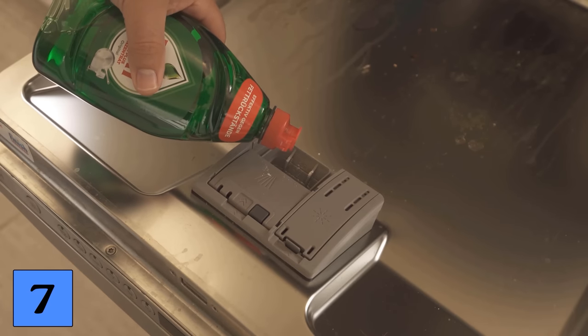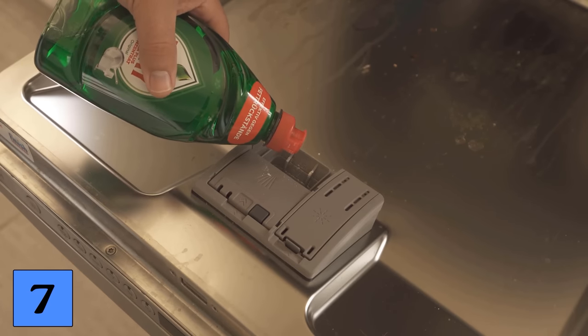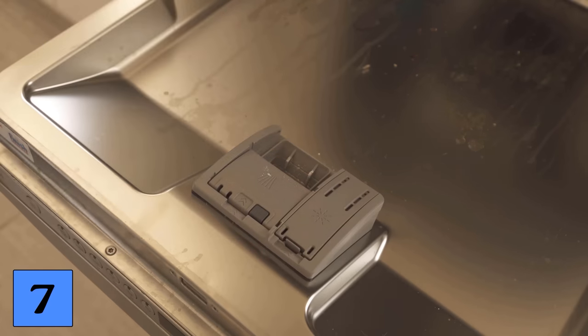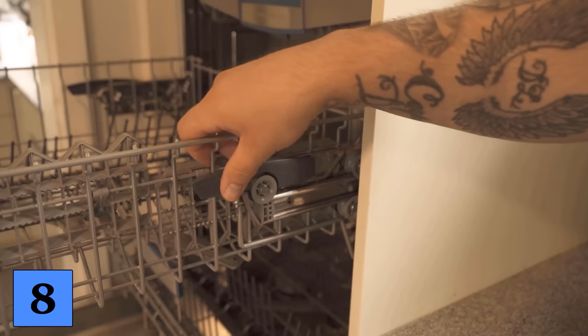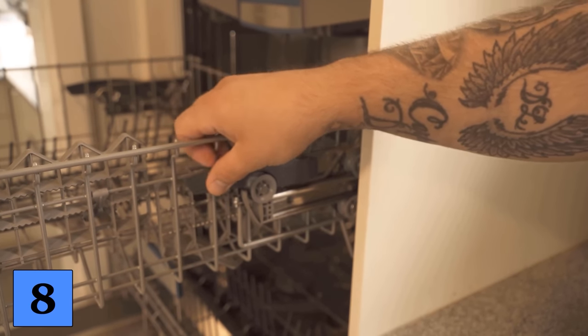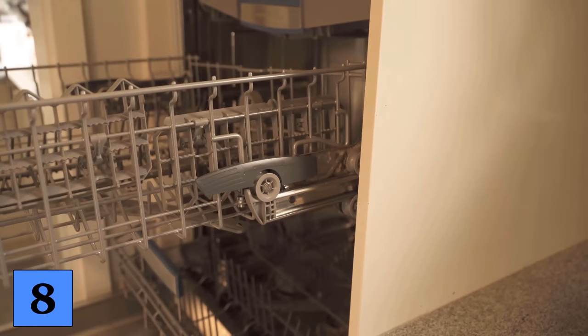And the eighth and final mistake is to use the space in the dishwasher incorrectly. Because did you know that you can usually adjust the height of the top rack? This way you can look at exactly what you want to put in the dishwasher and can vary this space still a little.